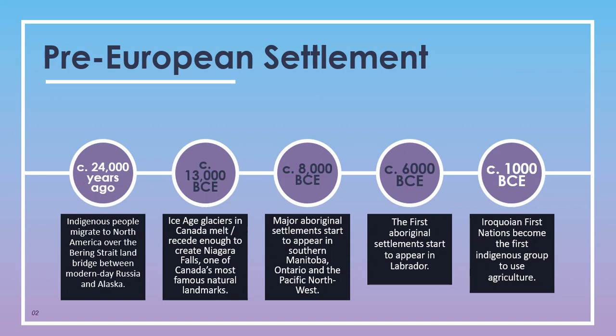Beginning about 24,000 years ago, indigenous people began to migrate into North America over the Bering Strait land bridge between what is now Russia and Alaska. We're looking at the height of the ice age, when the waters had receded and there wasn't a big ocean gap between those two continents. Around 13,000 BCE, the ice age glaciers in Canada began to melt or recede.